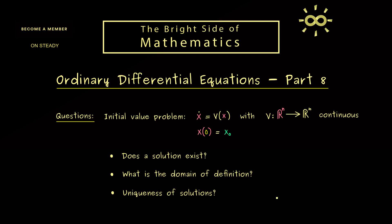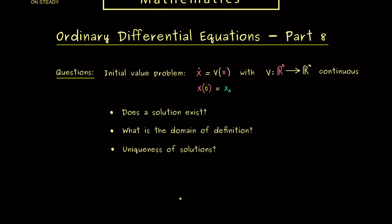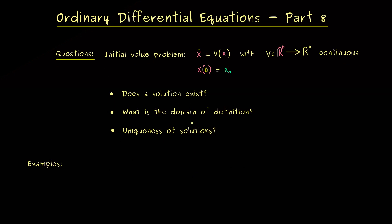Okay, now in this video here, we can answer the last two questions here with some well chosen examples. In other words, we will show that the domain of definition is not always R, and that the uniqueness of solutions is also not always given. So you could say we have some nice counter examples to answer these questions.